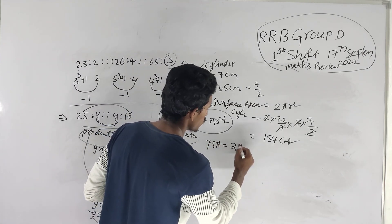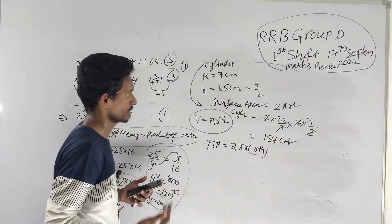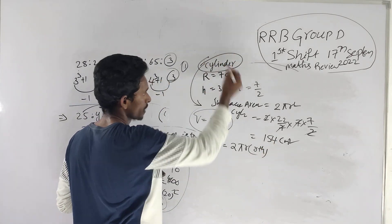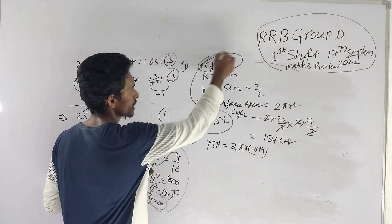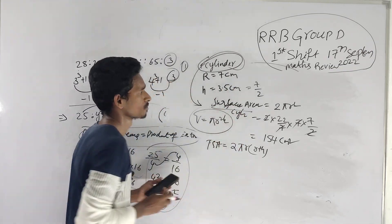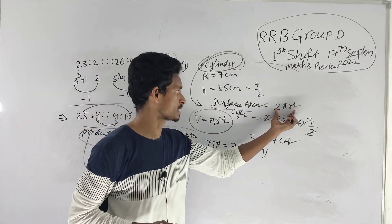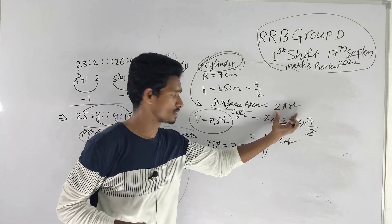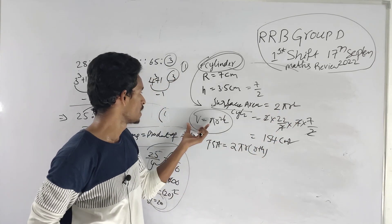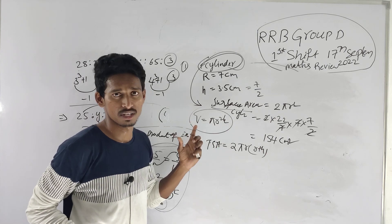The curved surface area of a cylinder is 2πrh. The total surface area formula is 2πr(r + h). The volume formula is πr²h.